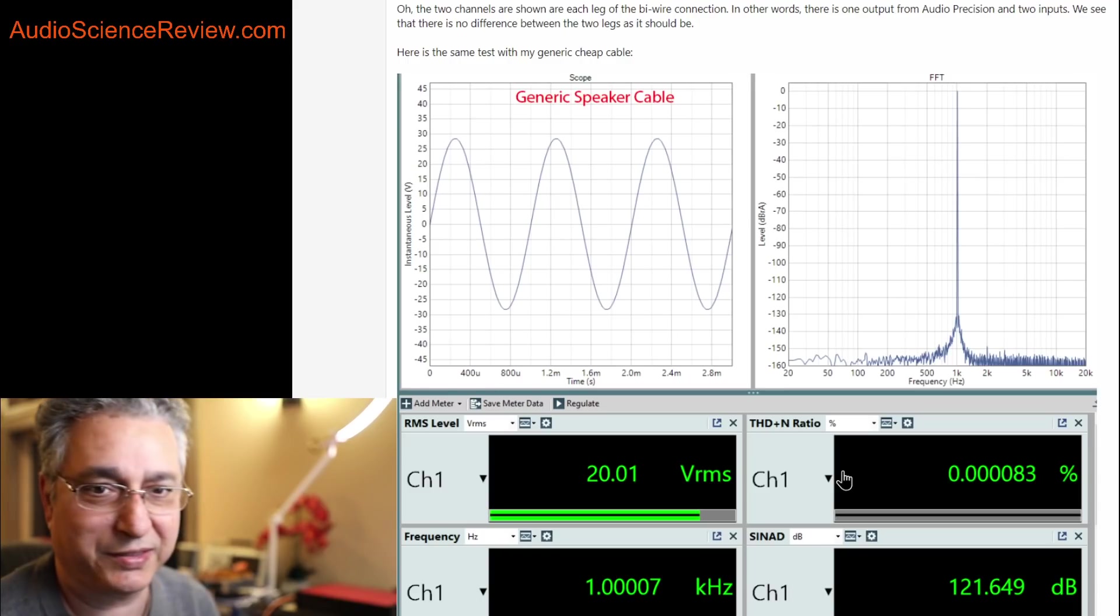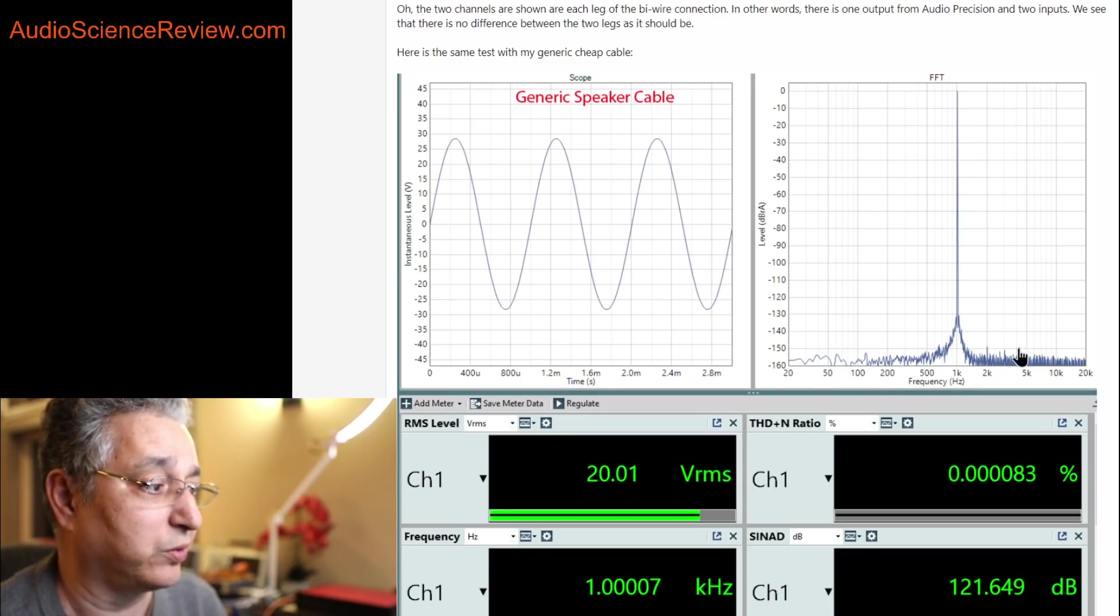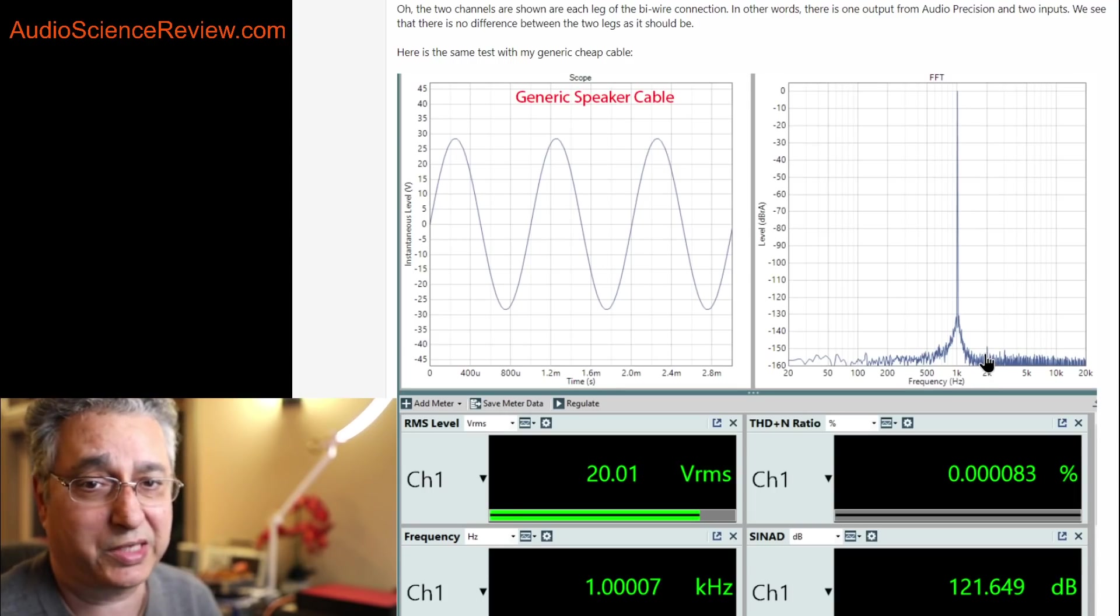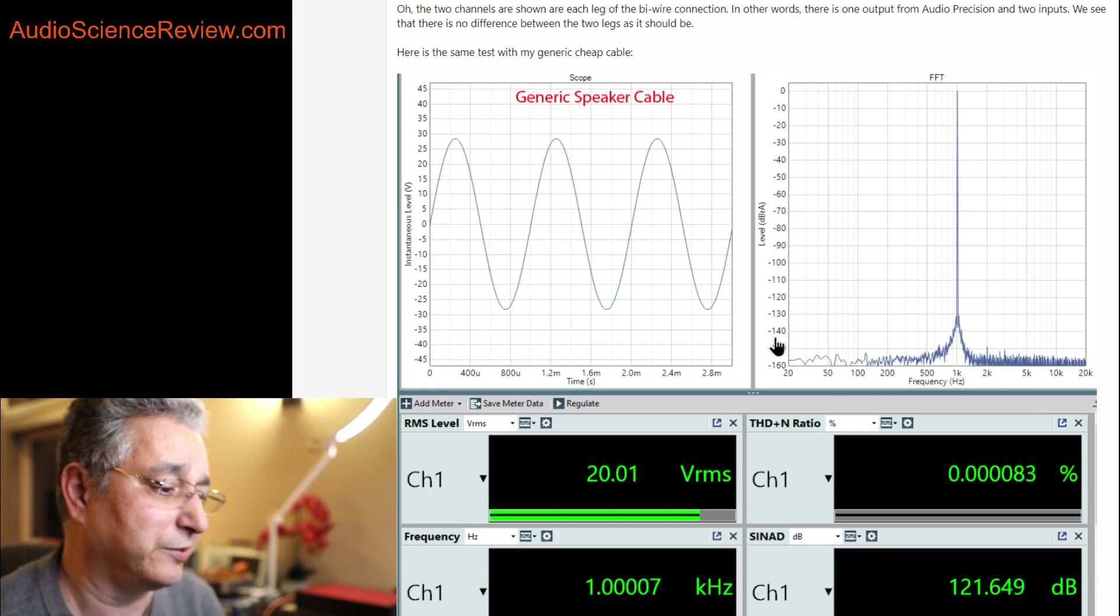The distortions are in minus 150 decibels, and before was maybe 145 with the other cable. But again, these are just run-to-run variations. It shows that the crusty old 30, 40-year-old cable is able to pass through this 20-volt signal with just vanishingly small distortion noise. Our threshold of hearing for anything, any tone, any sound is about minus 115 here. And we can see that we were able to, with both of these cables, far exceed the threshold of hearing for a human.